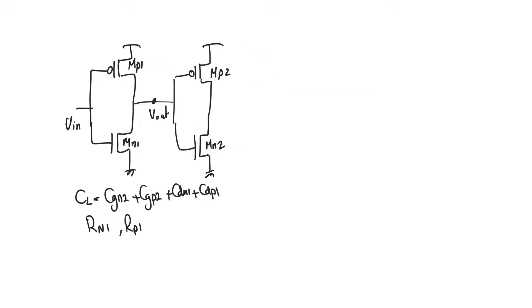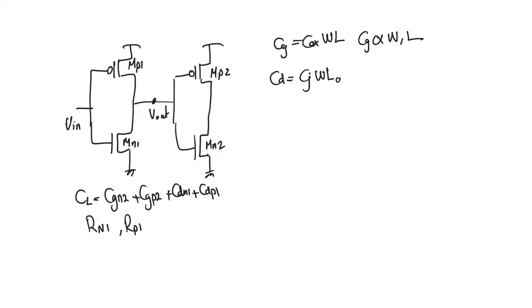Let's look at the expression for C-gate. C-gate equals C-oxide times W times L, so C-gate is proportional to both W and L. C-drain equals C_J times W times L-drain, so C-drain is proportional to W and is independent of channel length to first order.